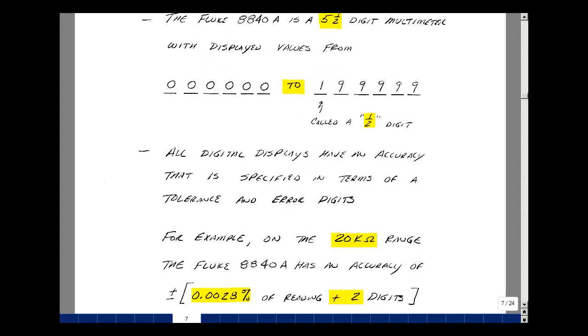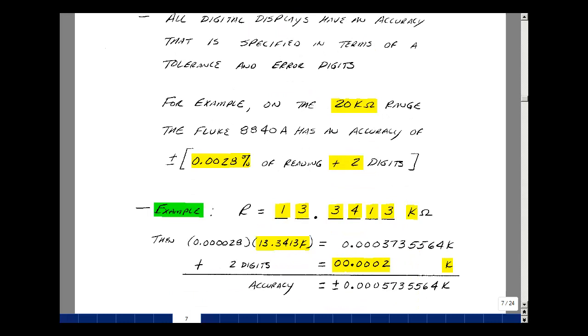Let me do an example to show you what the accuracy of a reading is. Suppose that we're on the 20k scale, and what that means is that the value here can go up to 19.9999k. Now on that scale, the accuracy is 0.0028% of the reading plus two digits, or what are called counts. So if we had a reading that was 13.3413k ohms,